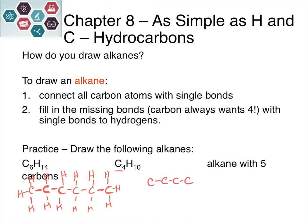The next example has four carbons. Filling in to give all carbons four bonds should take 10 hydrogens. The one on the end needs three, the two in the middle already have two bonds so they each need two hydrogens.